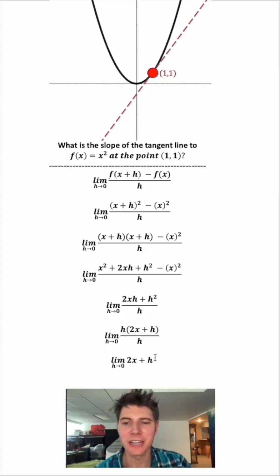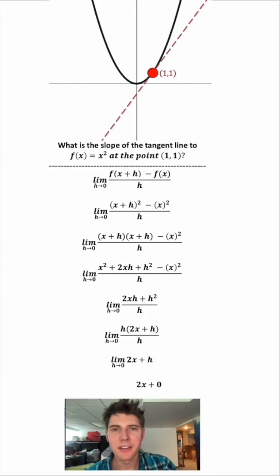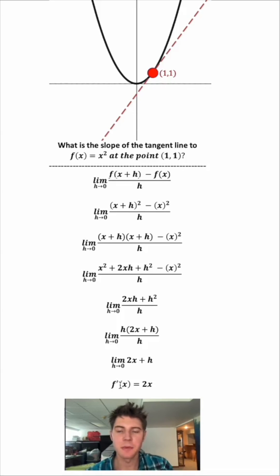Look what we just did. We no longer have an h in the denominator. We can now plug in zero for the h. And that gives us 2x plus zero, which is just 2x. And the notation we use for this, we say it's f prime of x. This means the derivative of x equals 2x. Or in other words, the slope of the tangent line is 2x.